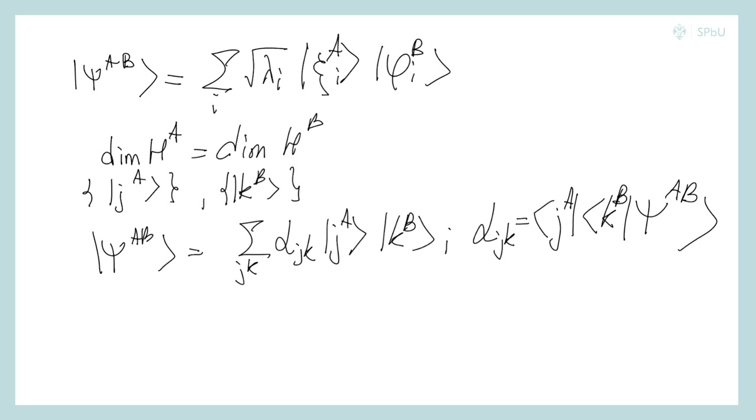The coefficients alpha G K form a Hermitian matrix alpha, which could be diagonalized. So, alpha equals U D V. Here D is a diagonal matrix with non-negative elements and U and V are certain unitary matrices for change of basis.